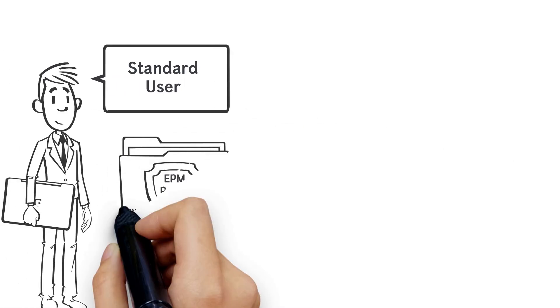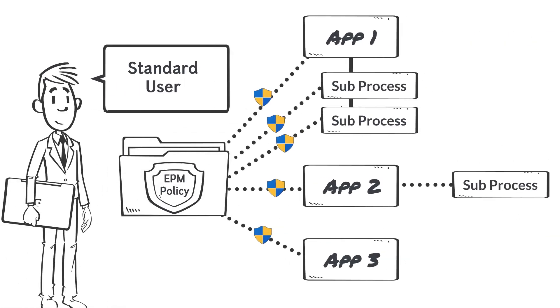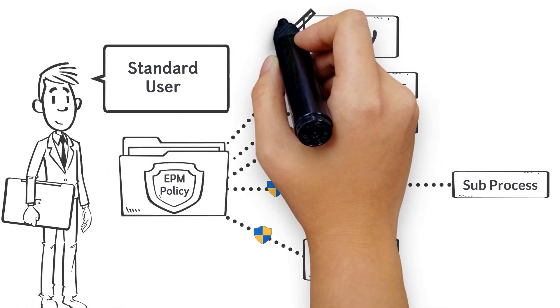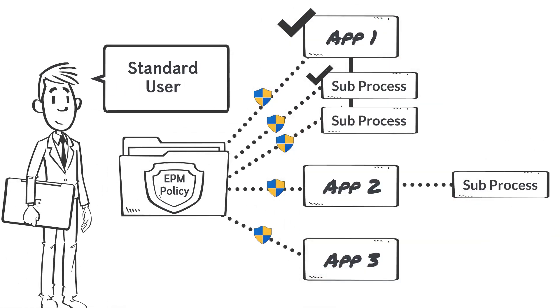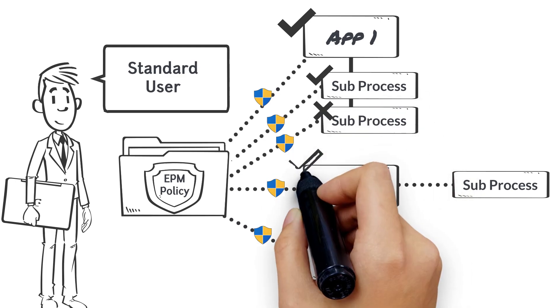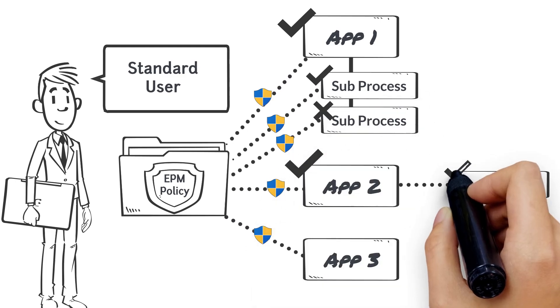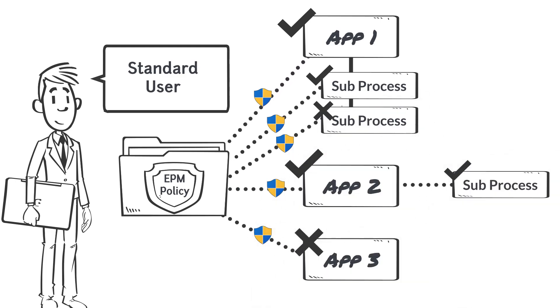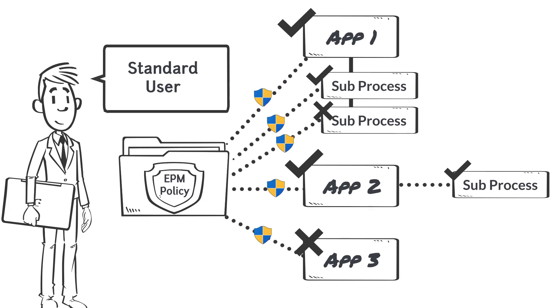CyberArk EPM builds on the security concepts of UAC by extending the ability to only elevate when necessary to standard users. The decision to add an admin token for requesting applications is instead handled by policy.